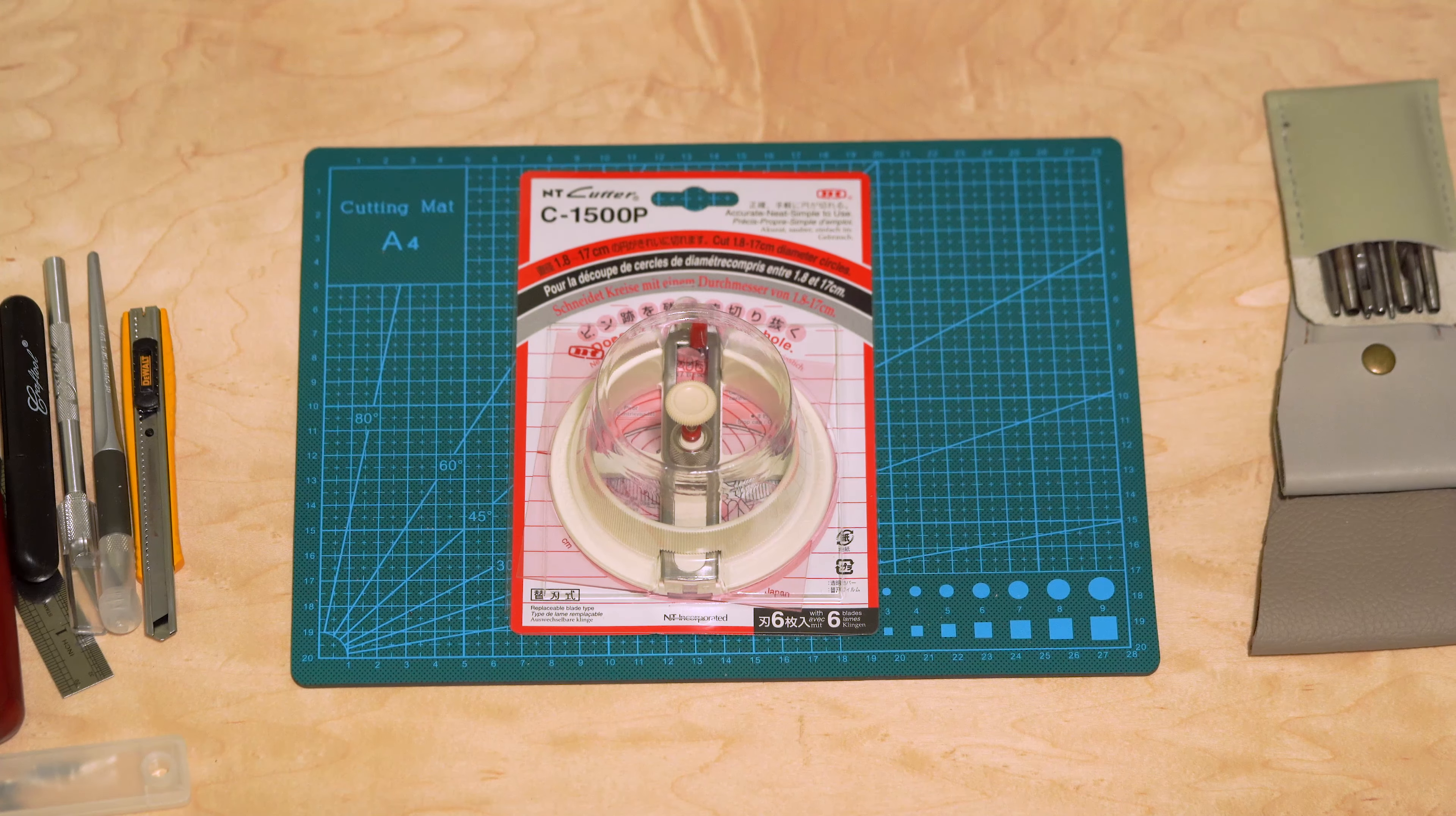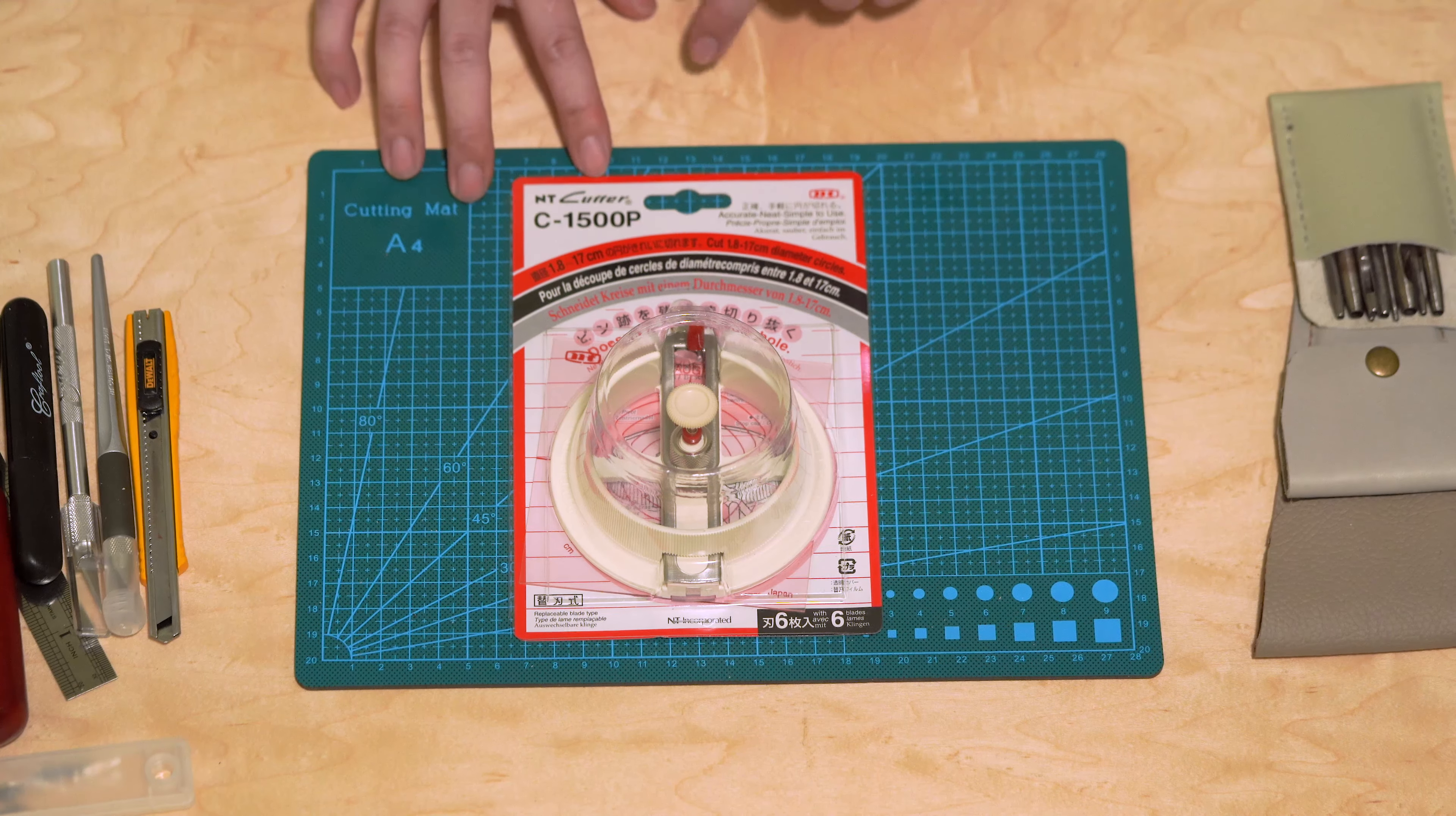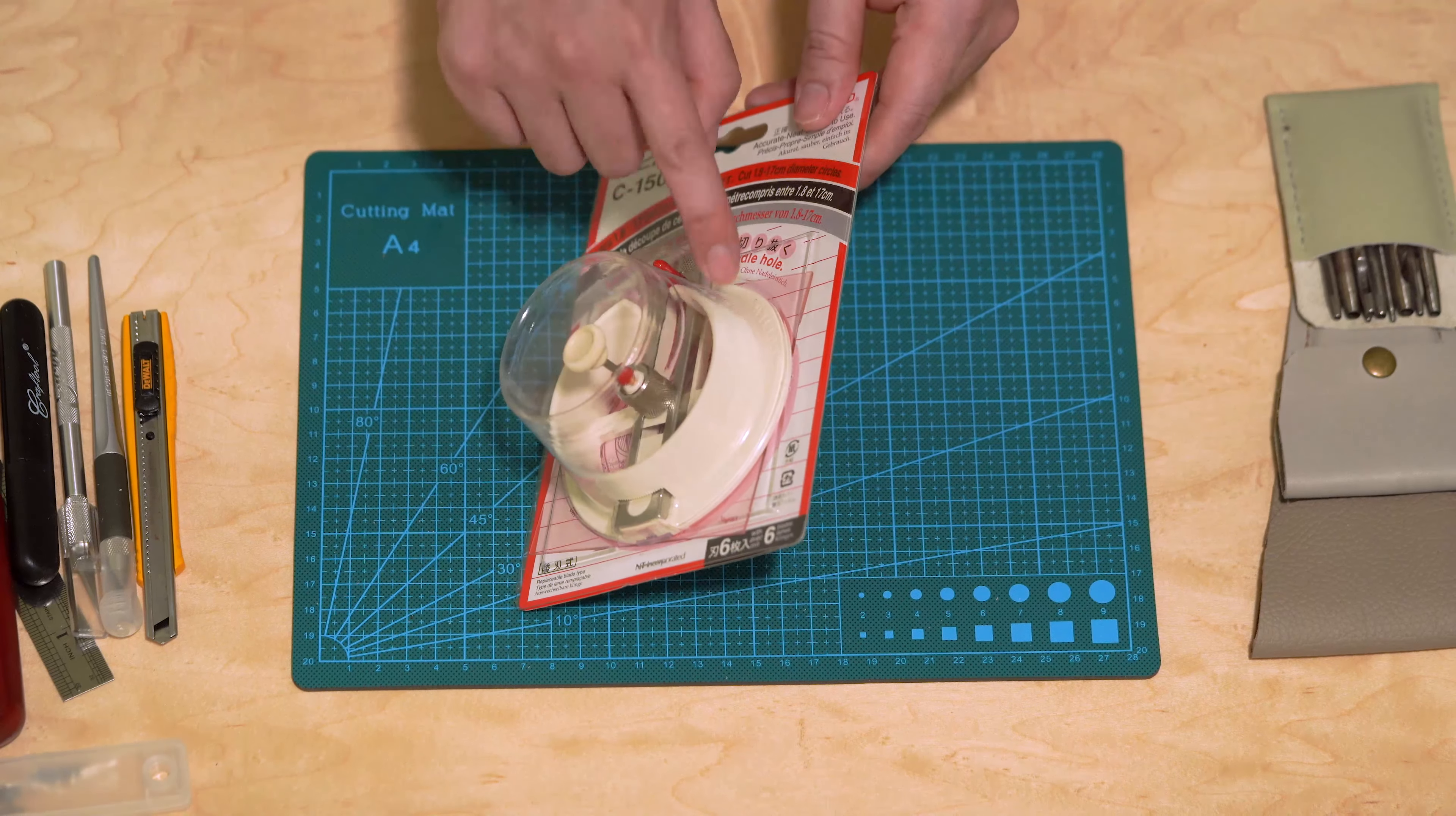Hello everyone, so today we'll be reviewing a circle cutter. This circle cutter is made in Japan by a company called NT Cutter. I just reviewed their art knife for leather crafting, and this is a circle cutter which is the model number C1500P. This one, the reason I bought this one which by the way is plastic construction, is because this one actually does not require you to punch a hole on the object that you're cutting the circle on.